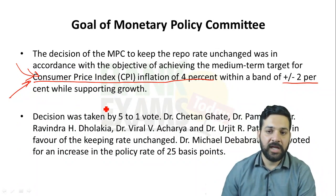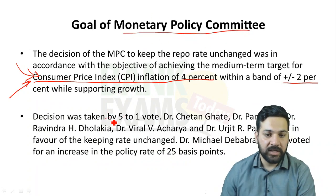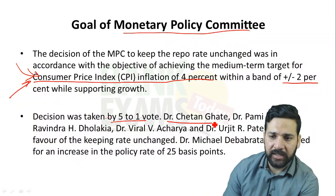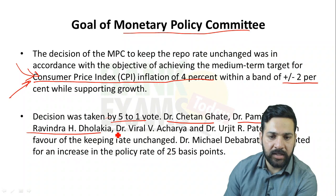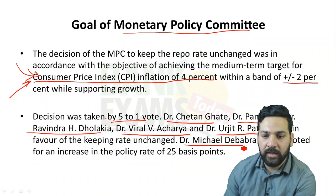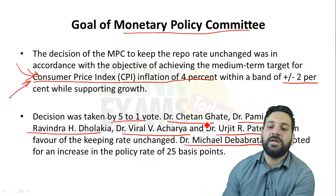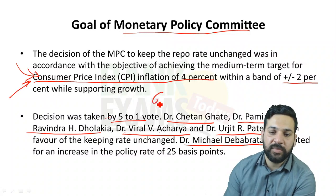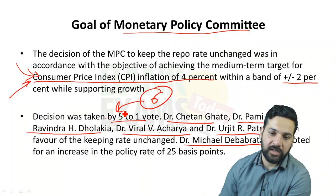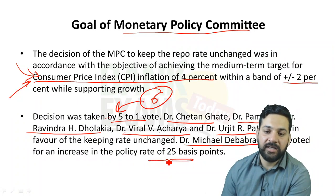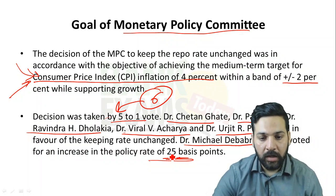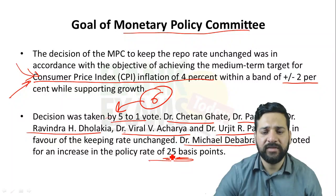In this monetary policy committee there are six members: Chetan Ghate, Pami Dua, Ravindra Dholakia, Viral V. Acharya, Urjit Patel, and Michael Debabrata Patra. Five members voted in favor of no change in the rates, while one member said there should be an increase in the policy rate by 25 basis points.